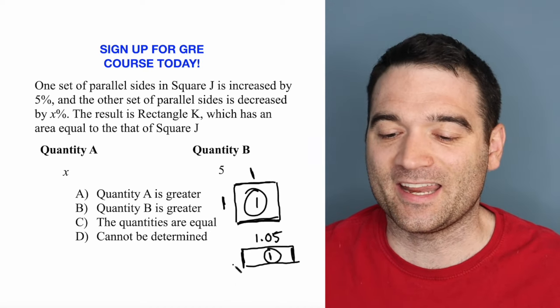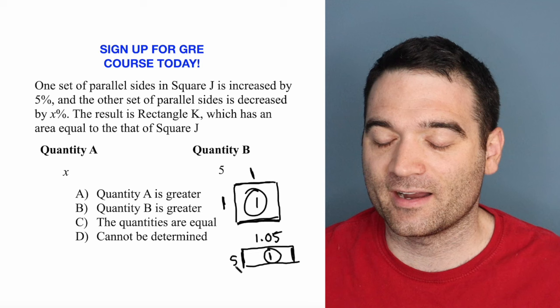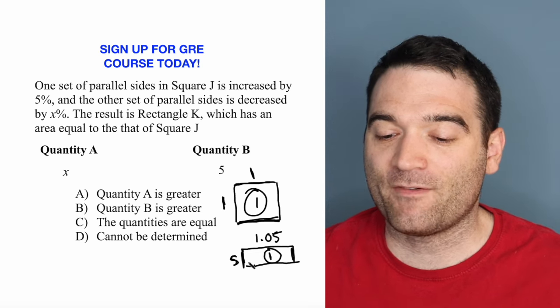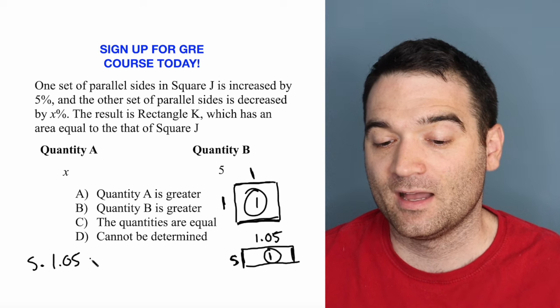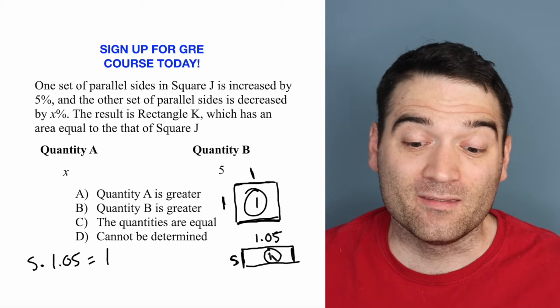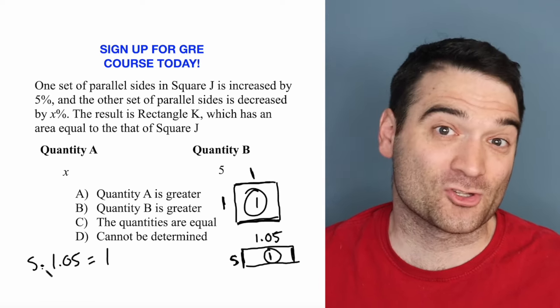So what's the distance of this side here? Well, let's call that S. If I do S times 1.05, I will end up with 1. And this allows me to solve for S.